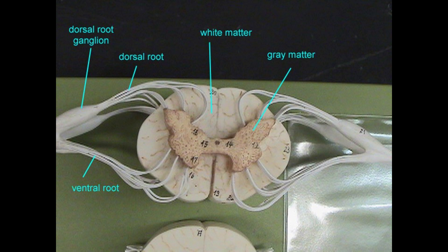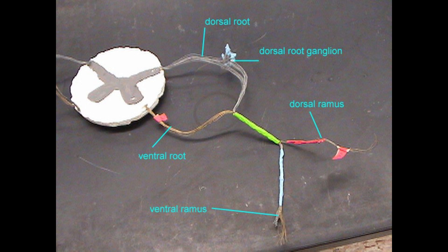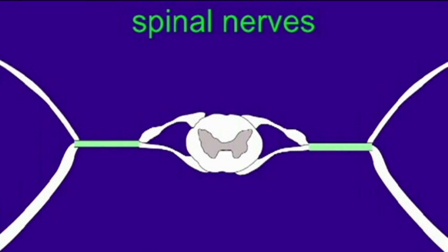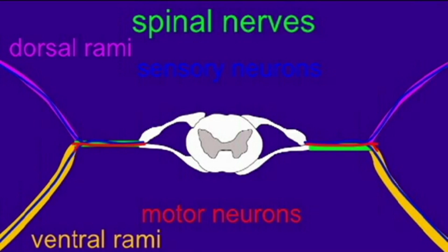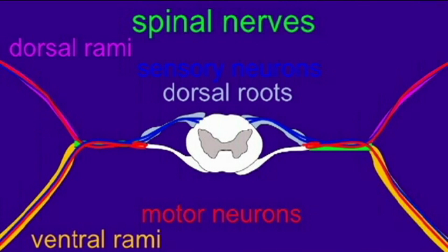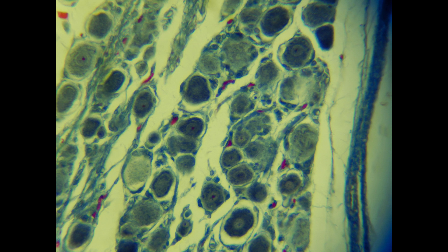The dorsal root ganglia have the soma of these sensory neurons. Sensory information such as touch, pain, and temperature are relayed through a branch of the spinal nerve, which then comes into the dorsal root. In the middle of the dorsal root there is a swelling — the dorsal root ganglion — which contains the soma of the sensory neurons.